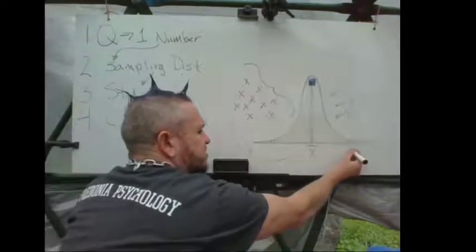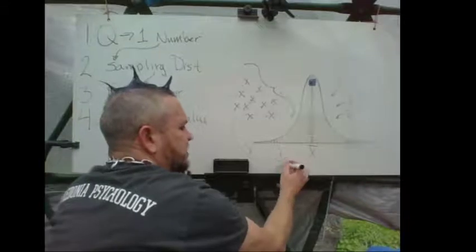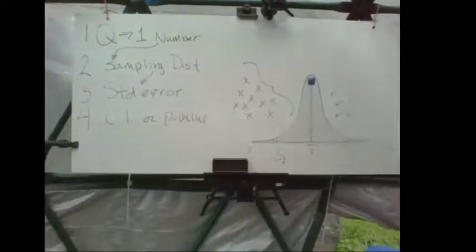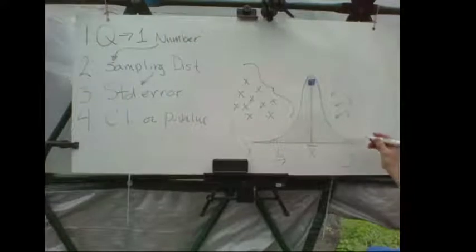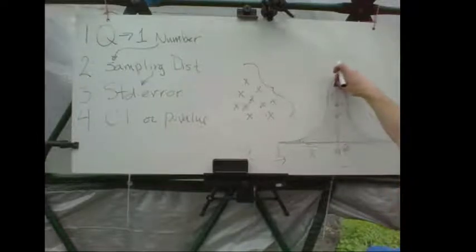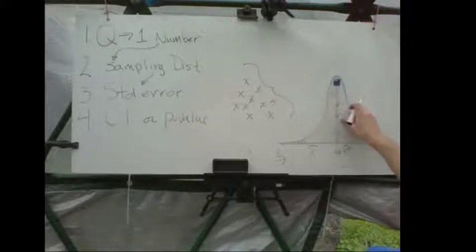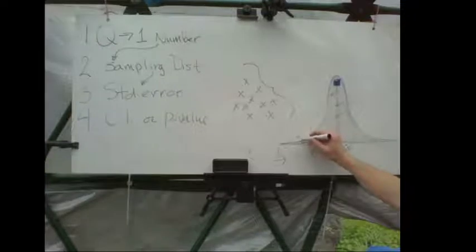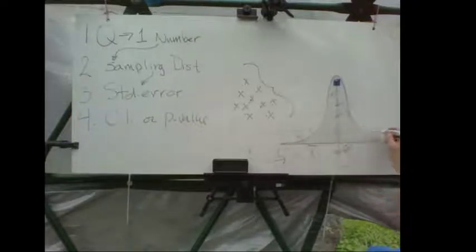You go 1.96 standard errors in each direction and those two numbers form a confidence interval. Or, if you're doing a hypothesis test, you specify a null hypothesis value — maybe 98.6 degrees Fahrenheit — and center the distribution over that. Then you find where your sample mean fits, what the p-value is, compare it to alpha, and do a hypothesis test.